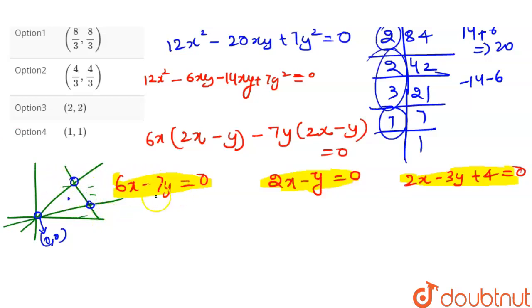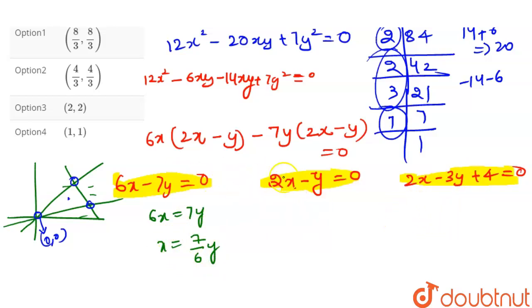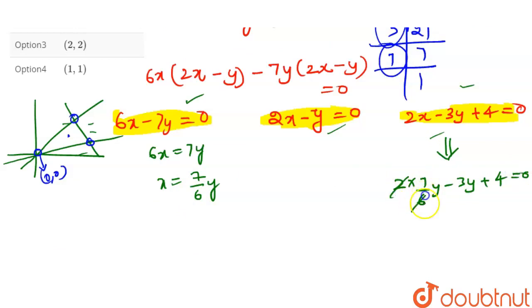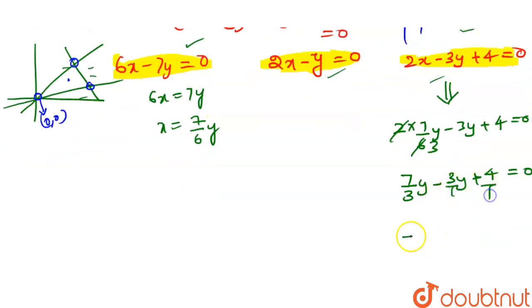From 6x − 7y = 0, let x = 7y/6. Substituting into 2x − 3y + 4 = 0 gives 2(7y/6) − 3y + 4 = 0, which simplifies to 7y/3 − 3y + 4 = 0.